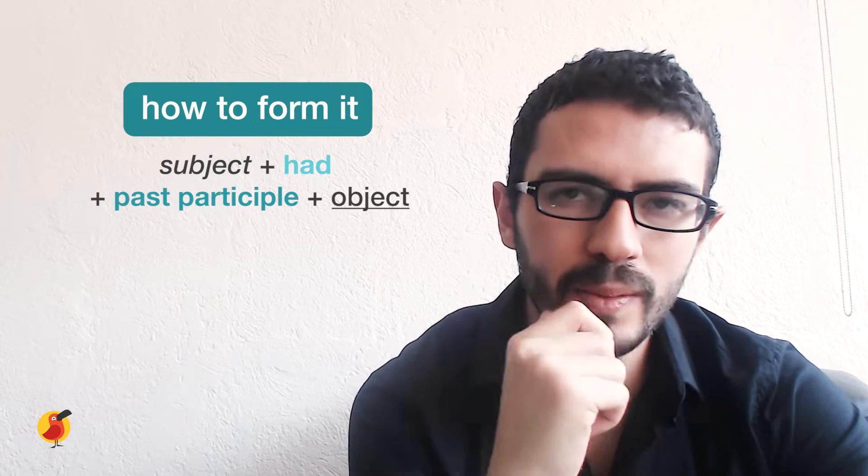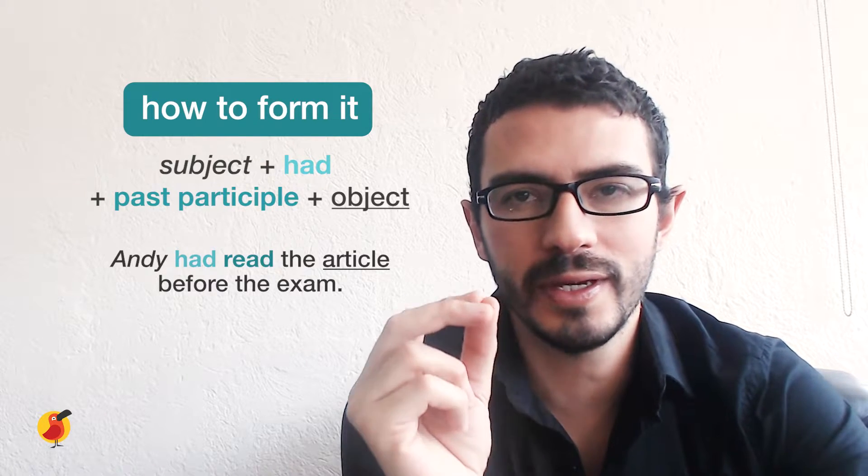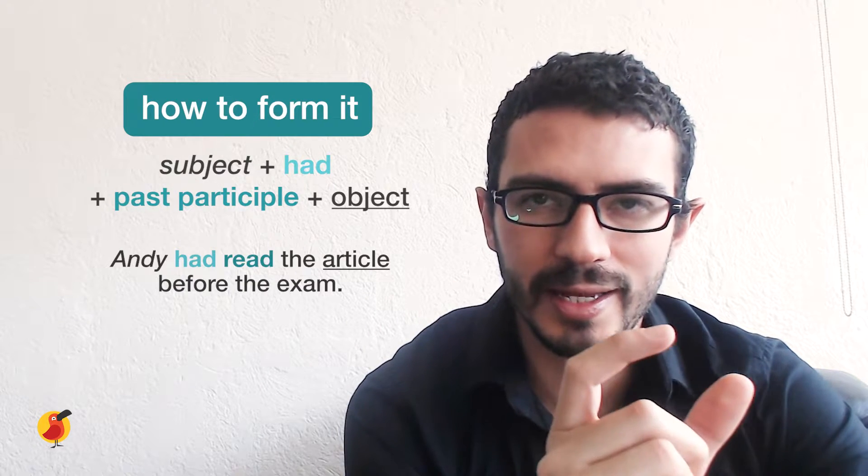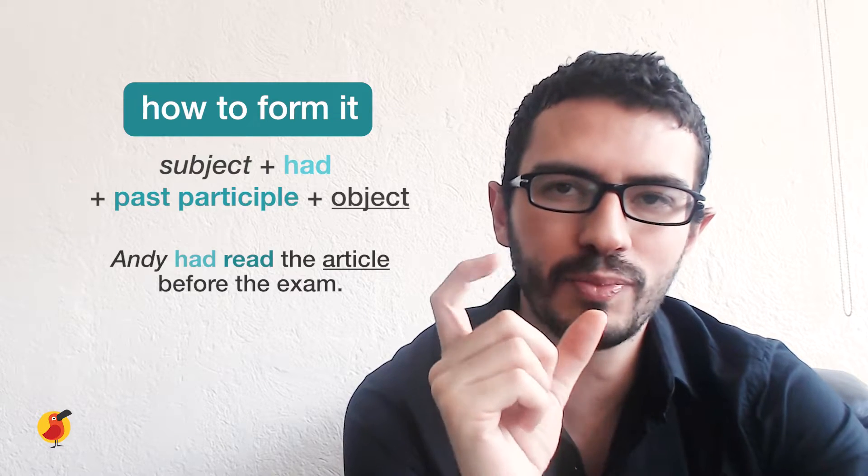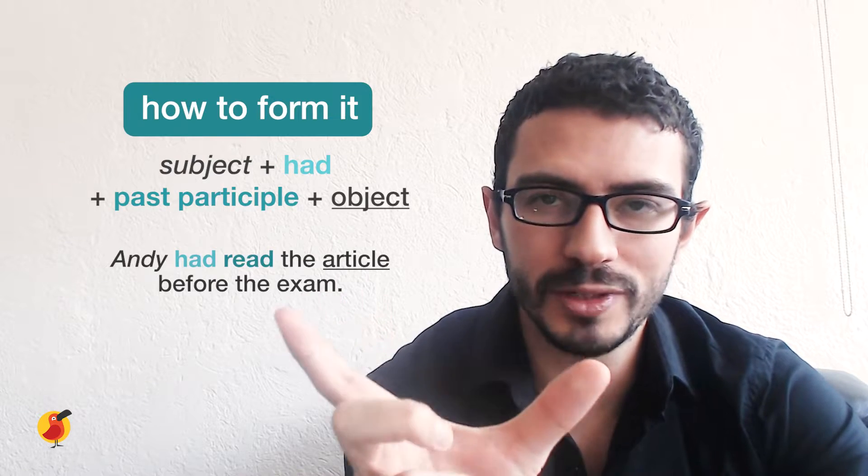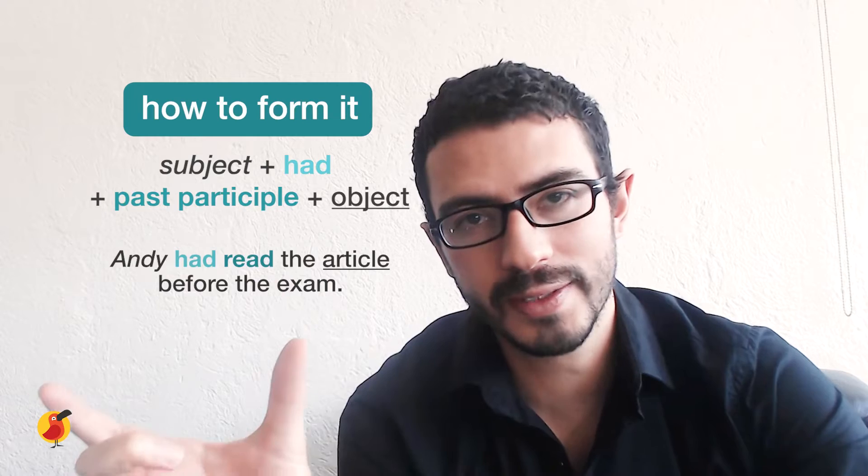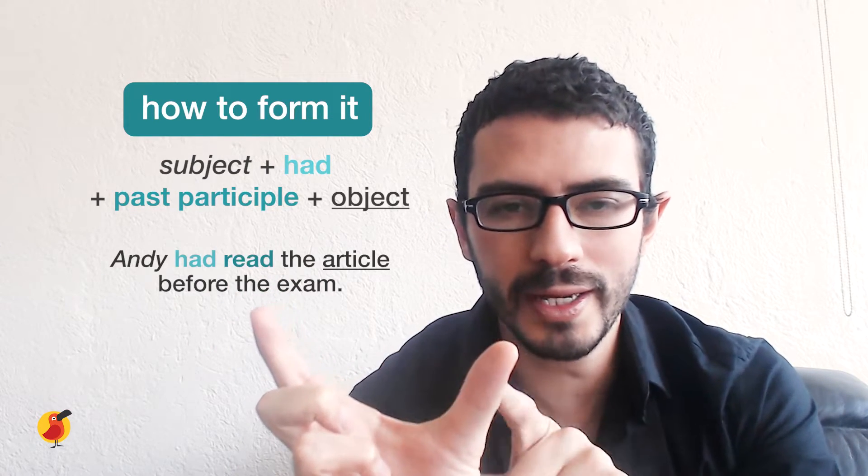So let's see an example. Andy had read the article before the exam. So you have the subject, which is Andy, plus had plus the past participle, which is read, plus the object, which is what's happening, that it would be the article before the exam, those two events that are correlated.